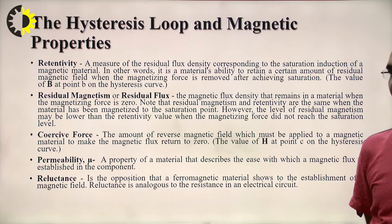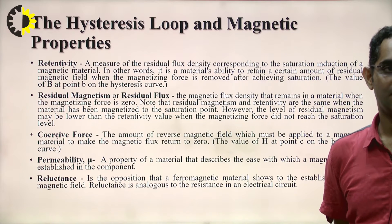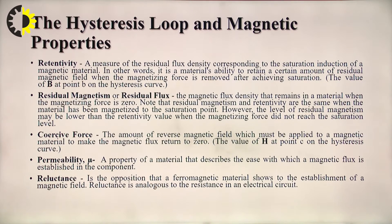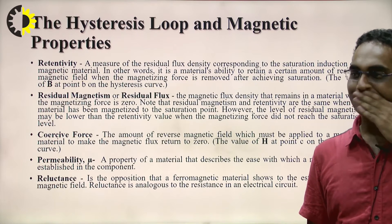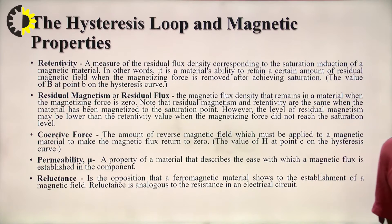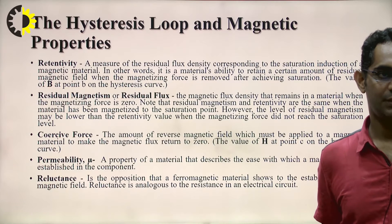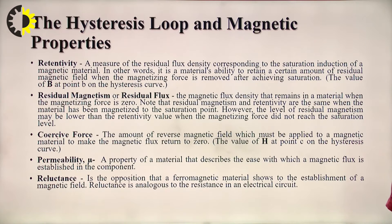Next is permeability (mu) — a property of a material that describes the ease with which a magnetic flux is established in the component. Reluctance is the opposition that a ferromagnetic material shows to the establishment of a magnetic field, and reluctance is analogous to resistance in an electrical circuit.